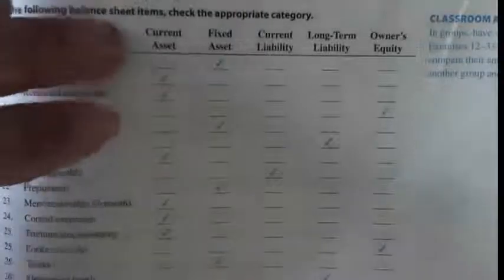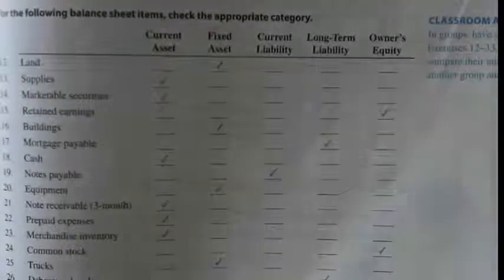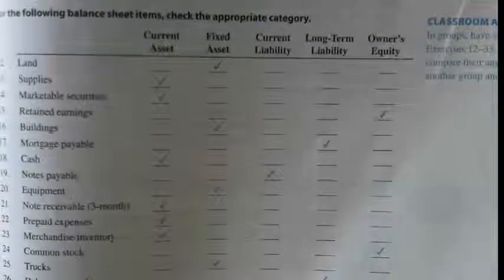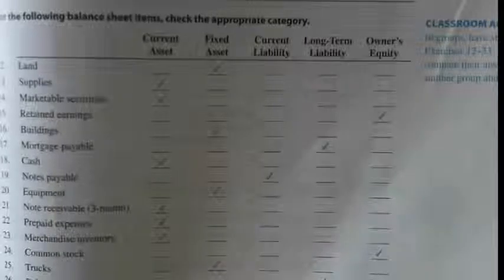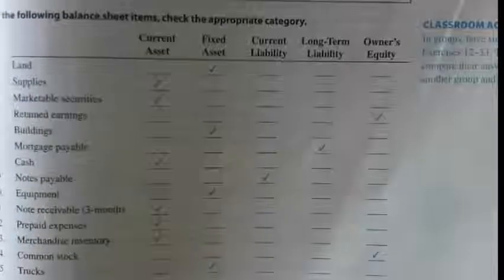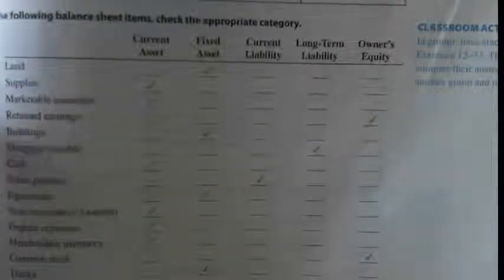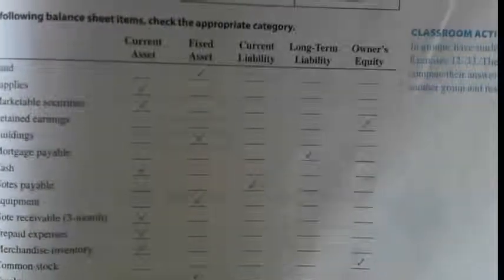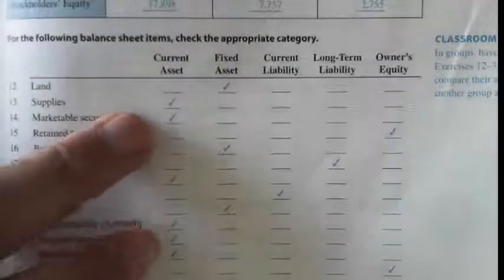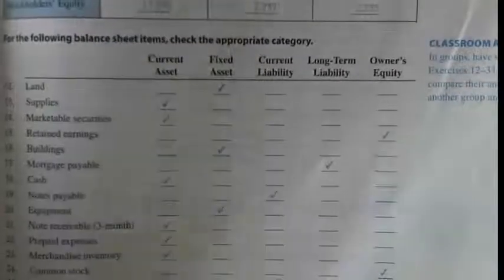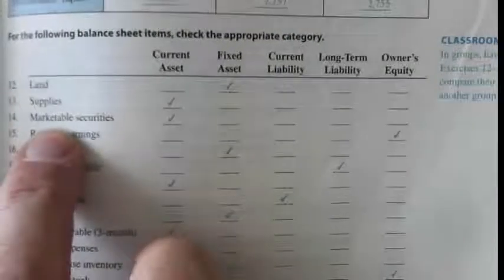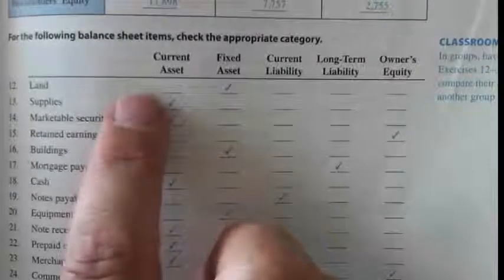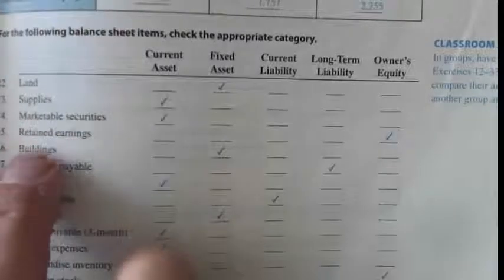Number 12 starts with land. The choices are current asset, fixed asset, current liability, long-term liability, and equity. Land is obviously a fixed asset — it's not going anywhere, it stays the same, and you're not going to sell it. Number 13 is supplies, which are going to be used up, so that's a current asset. Next, marketable securities — the key term is 'marketable,' meaning you could sell it or turn it into cash, so that's also a current asset.